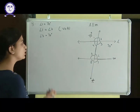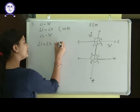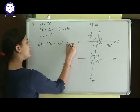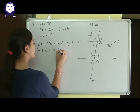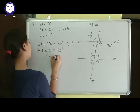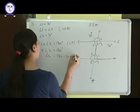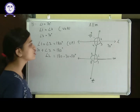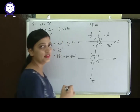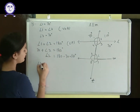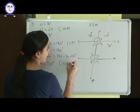Now I can find angle 2. Angle 1 plus angle 2 equals 180 degrees — that is linear pair. So 70 plus angle 2 equals 180, giving angle 2 equals 110 degrees. Then angle 4 is also 110 degrees by vertically opposite angles.